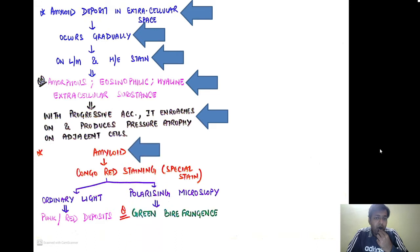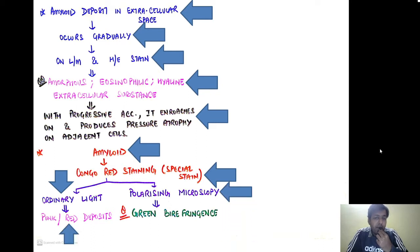We use a special stain to visualize amyloid: Congo red staining. Under ordinary light, deposits appear as pinkish or reddish deposits, but under polarizing microscopy they demonstrate an apple-green birefringence.